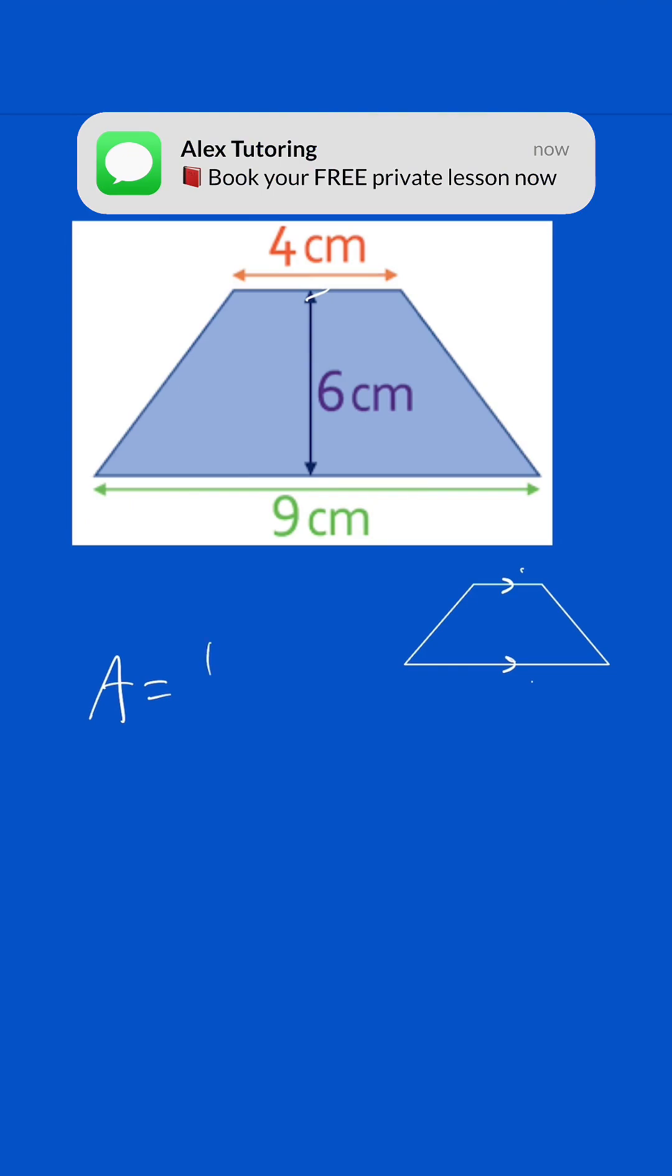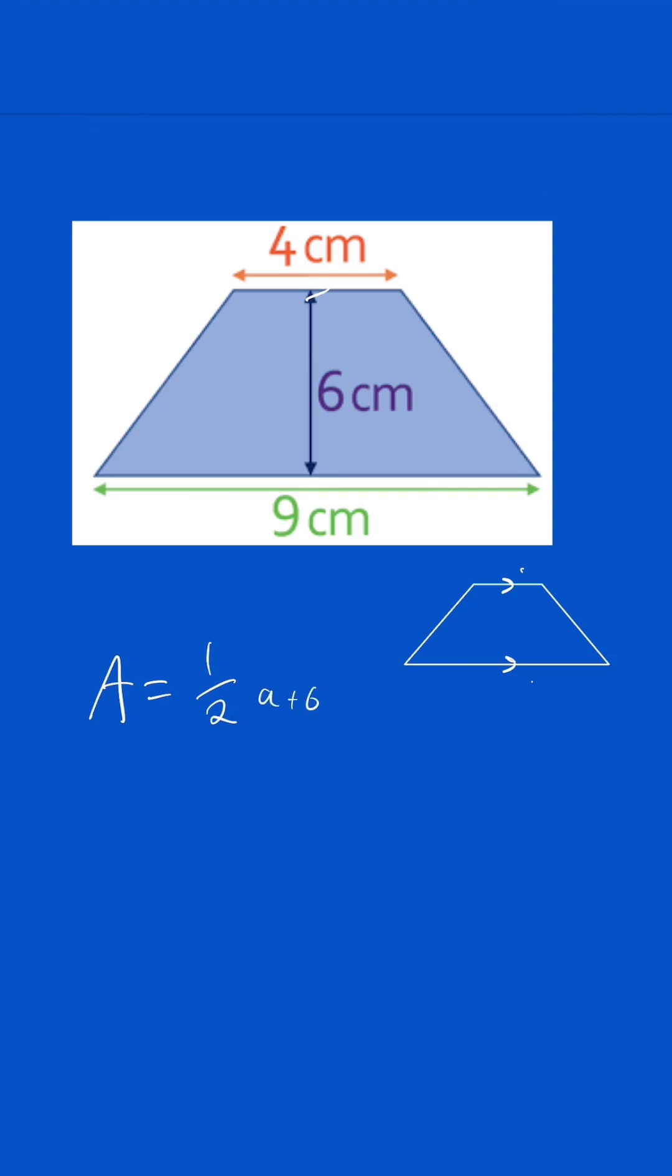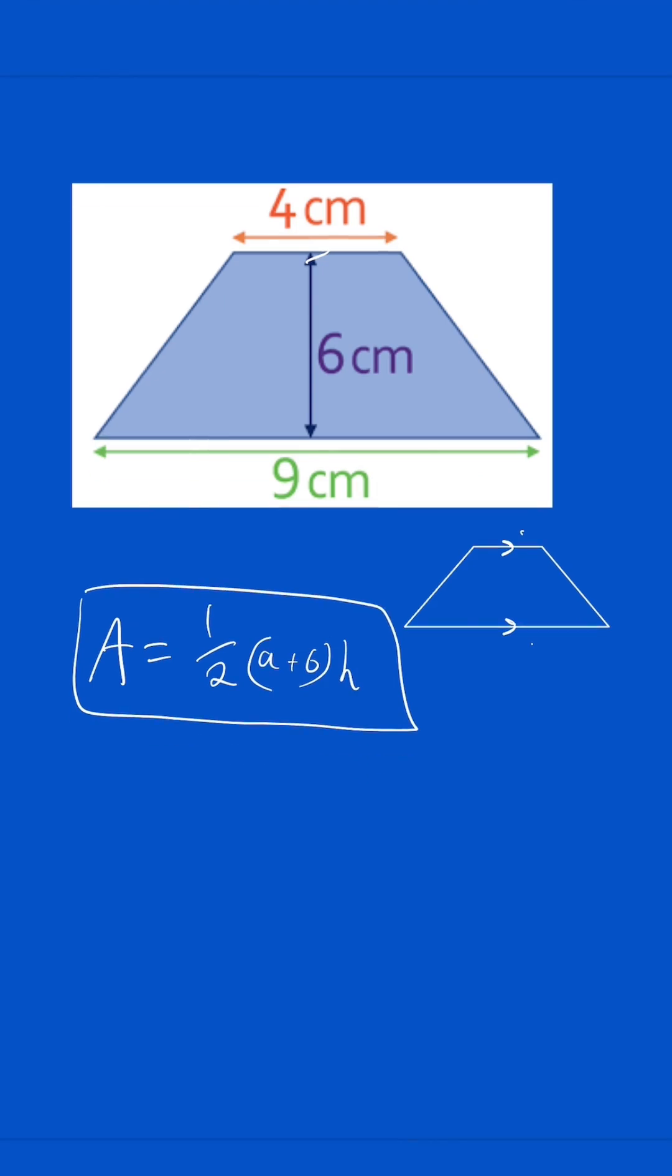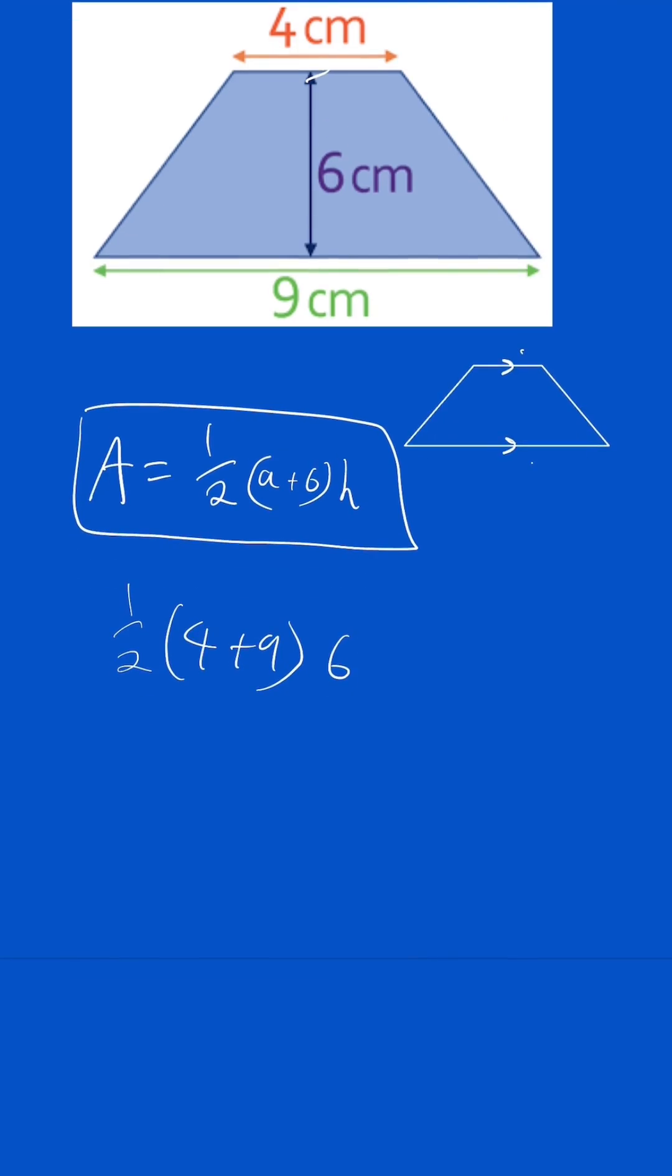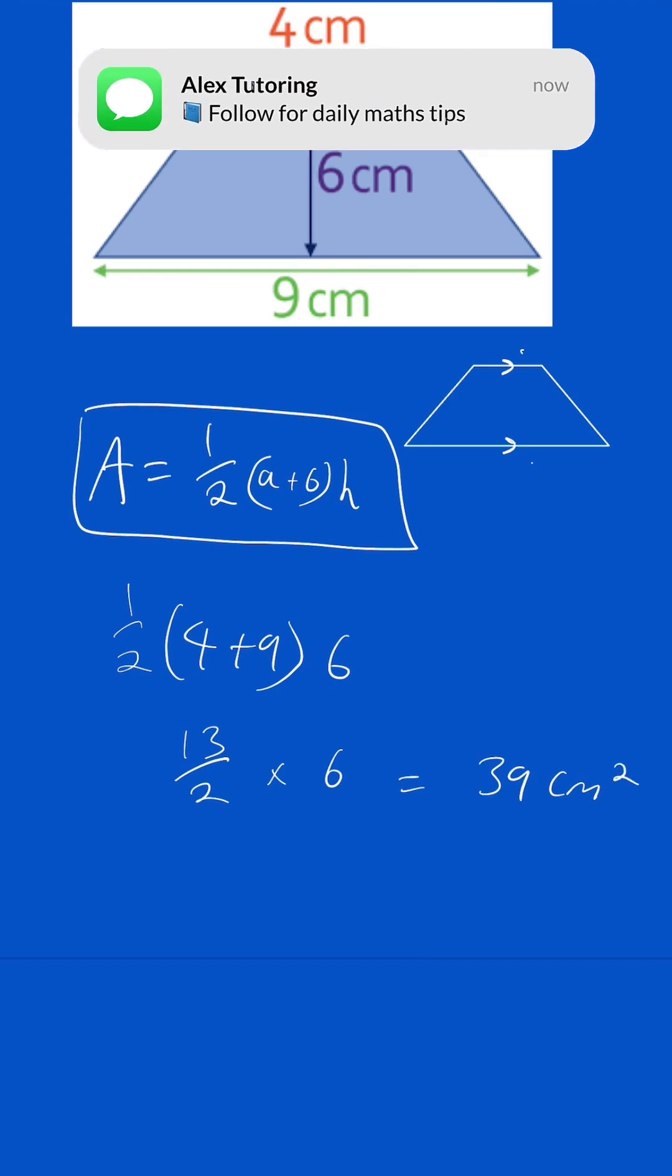To work out the area, it's area equals a half (a plus b) times h. This is your formula to work it out. In this case, it's going to be 4 plus 9, and a half of that times by 6. Adding this together is 13 over 2 times by 6, which on the calculator is 39 centimeters squared for this question.